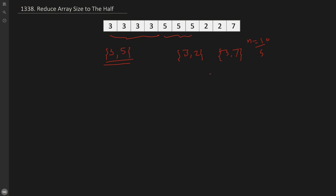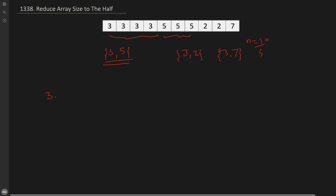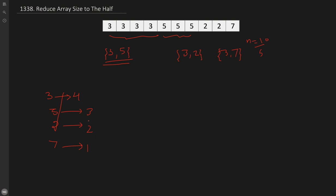Once you have this idea, the problem is very straightforward and can be solved in many ways. First, find the frequency of each element using a map or dictionary. Count occurrences: 3 appears 4 times, 5 appears 3 times, 2 appears 2 times, and 7 appears 1 time. Now we need to greedily pick the highest-frequency element first. One of the best data structures here is a max heap — we build a max heap of the frequencies.